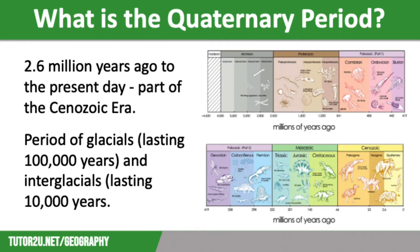People who are sceptical about climate change often quote the long-term changes in climate over this period of time. They use this as evidence that climate change is a natural process and not related to human activity.